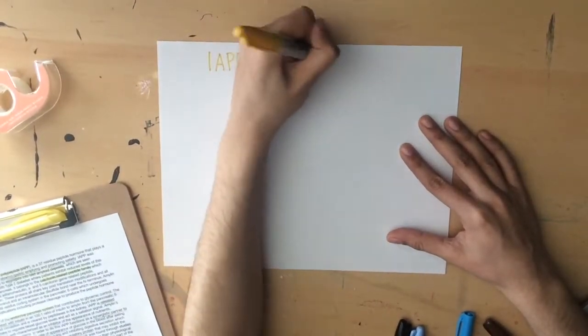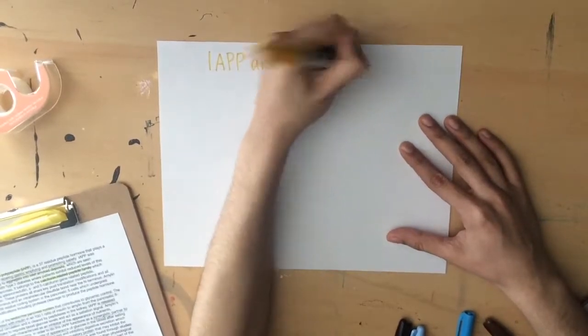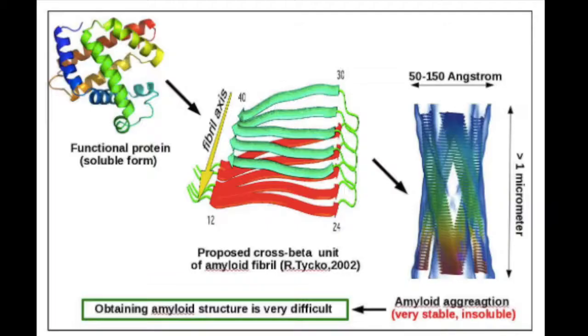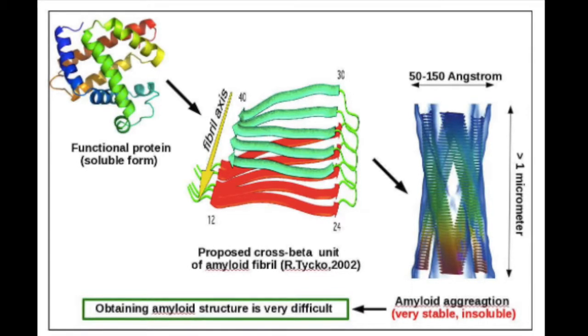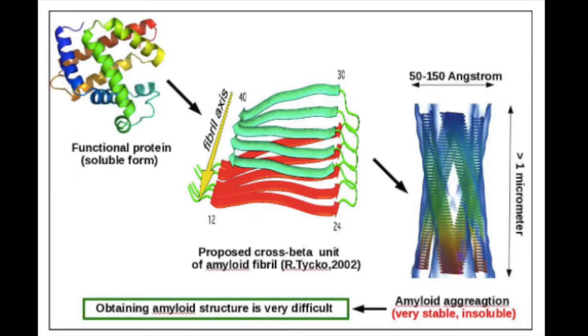Early pre-fibrillar structures can be extremely toxic to beta cells and islet cell cultures. The sequence of the 20 to 29 region is the primary region that dictates the ability of IAPP to form amyloid fibrils.